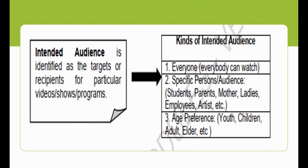Aside from the purpose, view texts like TV, cinema, and internet have an audience in mind for their various programs. Intended audience is identified as the targets or recipients for a particular video, show, or program. There are different kinds of intended audience. The first is everyone, which means everybody can watch. Second are specific persons or audience, like students, parents, mothers, ladies, employees, artists, and others. The last one is age preference, like the youth, children, adults, or elders.